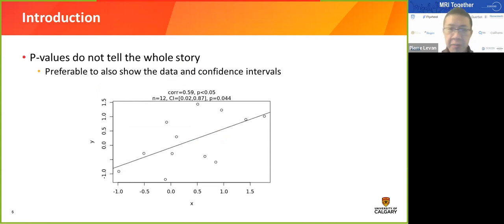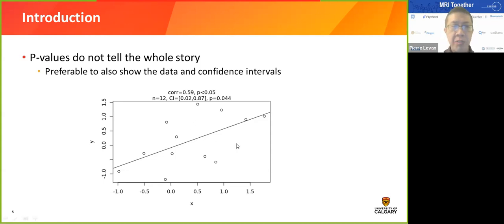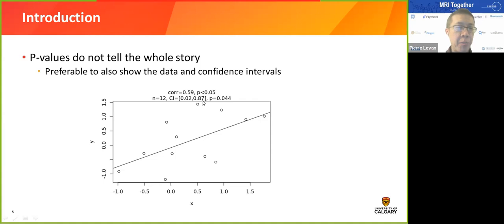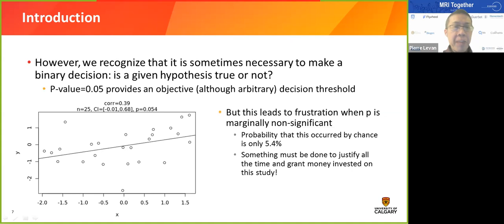It's clear that p-values don't tell the whole story. It's preferable to show the data and the confidence intervals. Going back to my example with 12 data points and a correlation of 0.59 — significant p-value of 0.04 — if I actually report the confidence interval, I see that even though the correlation is 0.59, the true value could lie anywhere between 0.02 and 0.87. That basically means I know nothing: it could be close to zero or close to one.